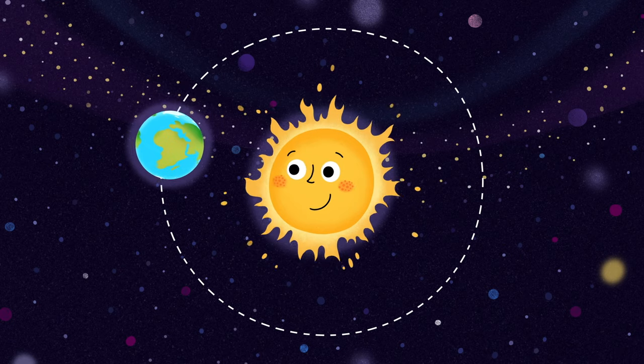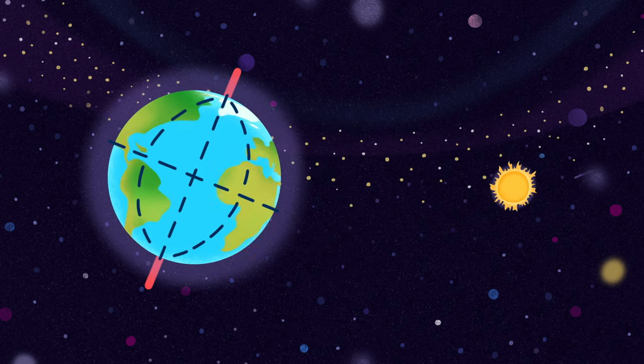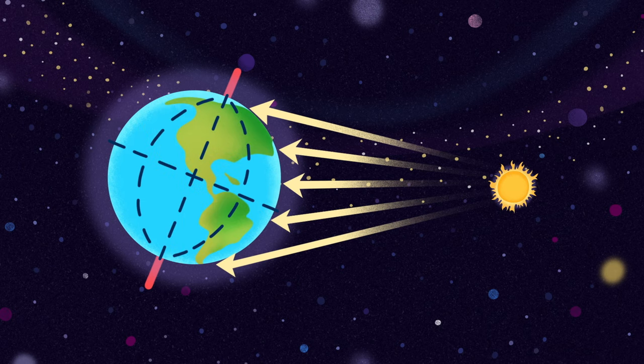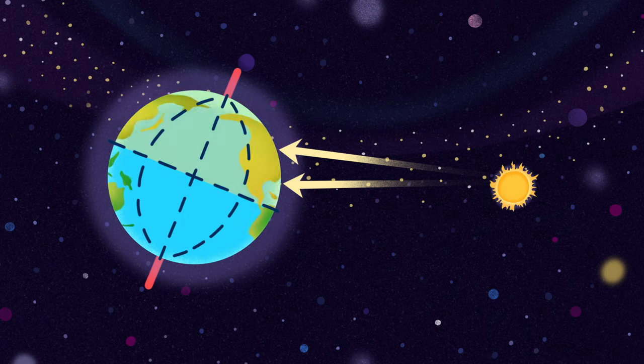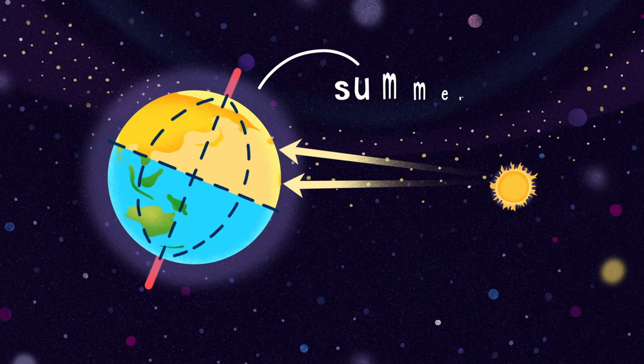The change of seasons also depends on the Earth's position relative to the sun. In the part of the Earth where the air and surface are well-lit and warmed by the sun, it's summer.